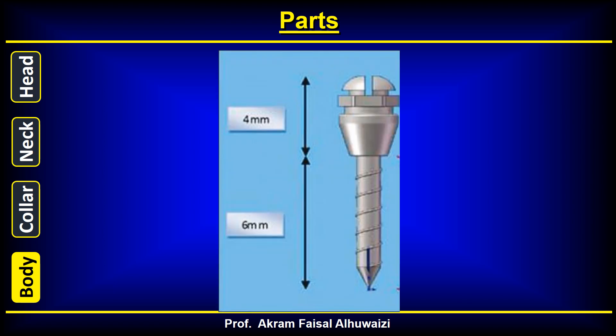The length of the body is usually stated on the outside of the package. So when you buy an implant that says it's six millimeters long, it's the length of the body that's six millimeters — not the whole implant.